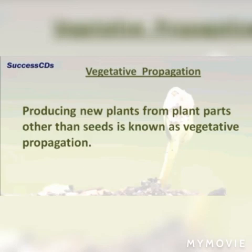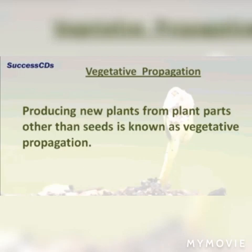There are also other methods apart from growing by seed. This is called vegetative reproduction. Producing new plants from plant parts other than seeds — such as stems, roots, and leaves — is known as vegetative reproduction. This process is also called vegetative propagation.